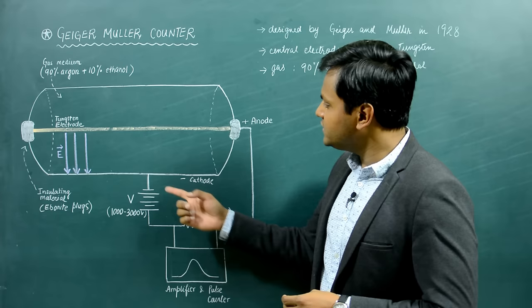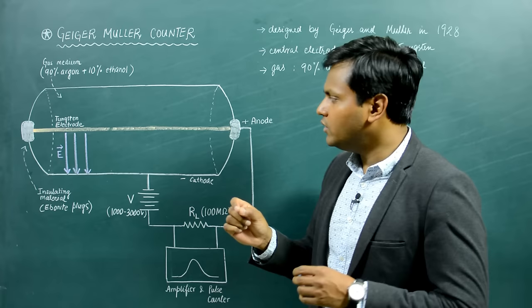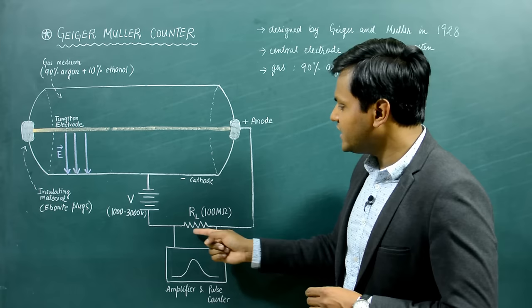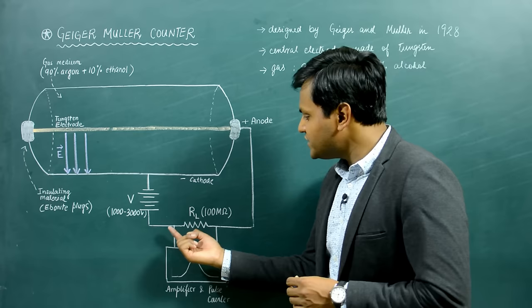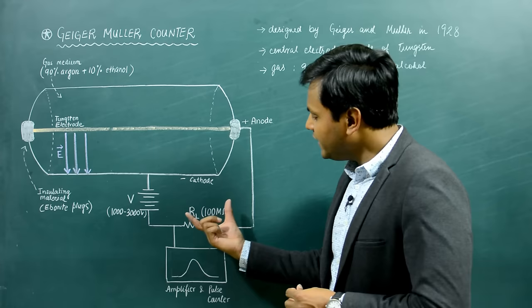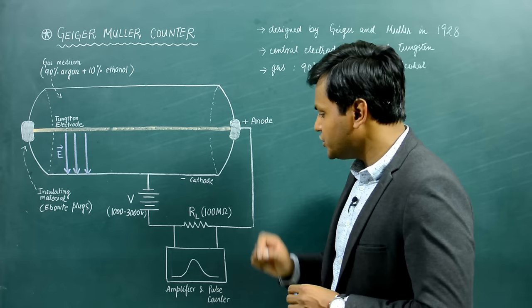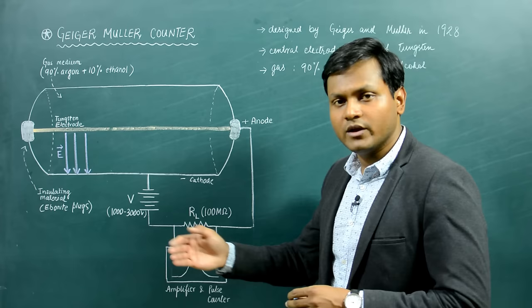This metallic cylinder is connected to the negative terminal of a very high tension battery, so it is acting as a cathode. Through the center of the cylinder, there is a metallic electrode made out of tungsten, connected to a load resistance which is again connected to the positive terminal of the same supply. Across the load resistance, there is an electronic setup capable of determining any potential drop across RL and measuring the amount of current pulse associated with that. It is also associated with a counter that can count events over a period of time.